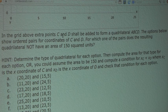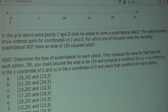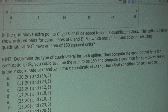Or you could assume the area to be 150 and compute a condition for xC plus xD, where xC is the x-coordinate of C and xD is the x-coordinate of D, and check that condition for each option.